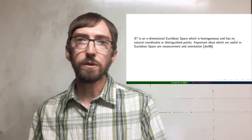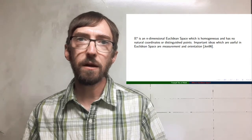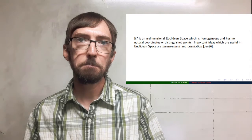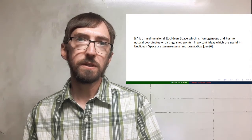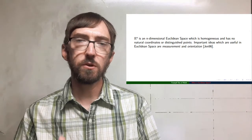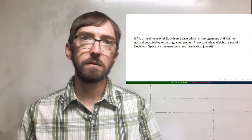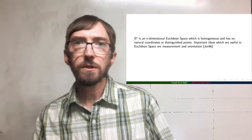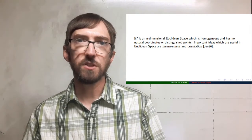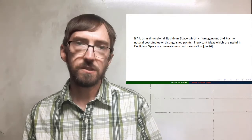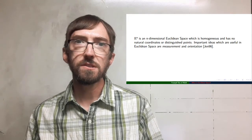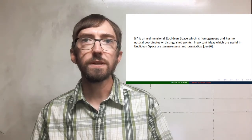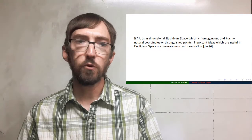We're going to use a bold E to the N power to represent an n-dimensional Euclidean space, where N represents natural numbers starting with one and going as large as you would like. A Euclidean space is homogeneous — it's the same everywhere. It's not going to have a natural coordinate system, and it's not going to have distinguished points, which helps add to that uniformity.